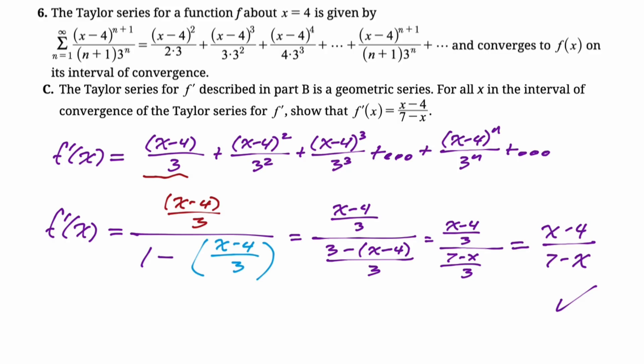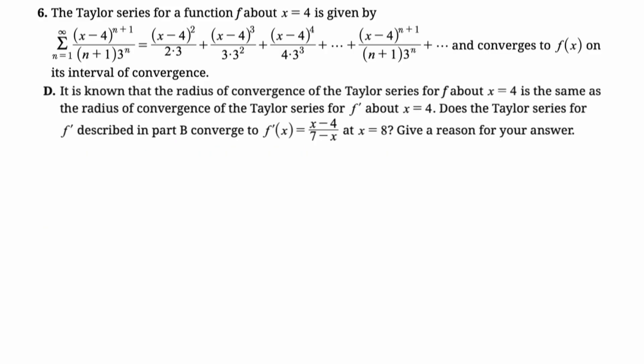It is known that the radius of convergence of the Taylor series for f about x equals 4 is the same as the radius of convergence of the Taylor series for f prime about x equals 4. I think it was on last year's FRQs that I totally forgot that fact, and I did the ratio test on two consecutive parts of the same question, which I knew was probably not what they wanted me to do, but it still worked. And so I would encourage you, if you know that it's going to work, just do the thing you know how to do. But they're telling us that fact this time, thankfully.